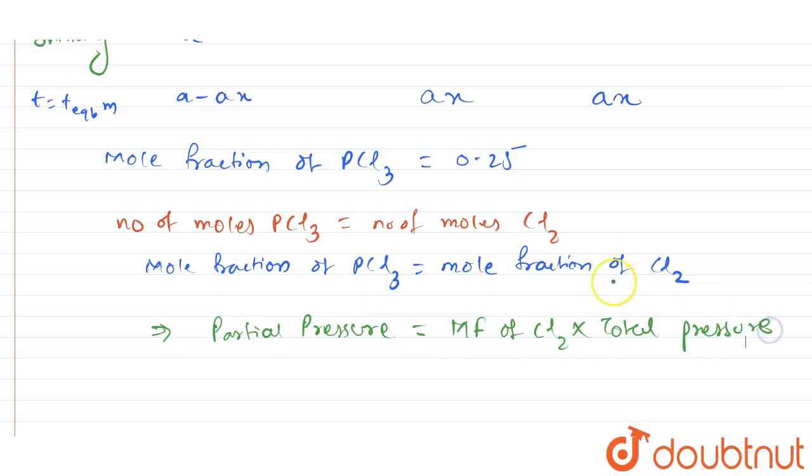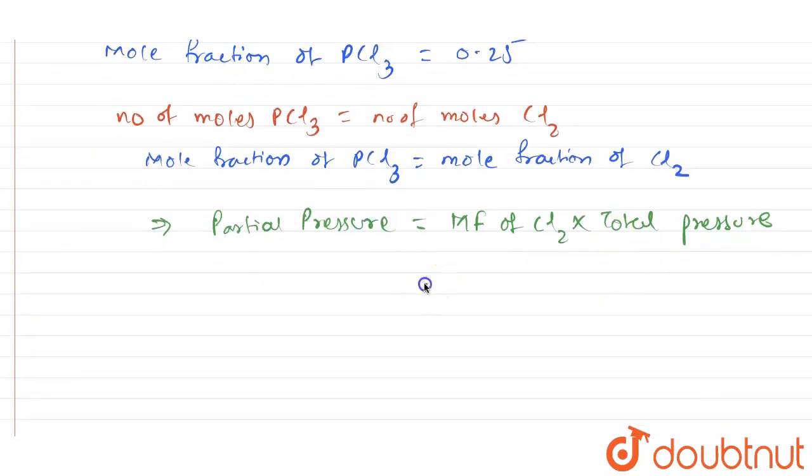In the question, the total pressure value is given as 2 atmosphere. So you can substitute the value. Mole fraction of CL2 we got as 0.25 multiplied by total pressure, that is 2.